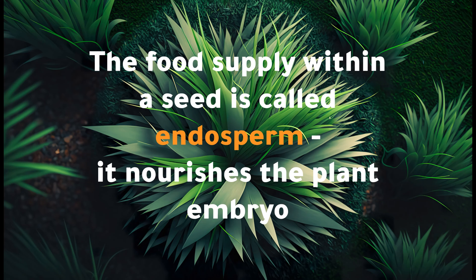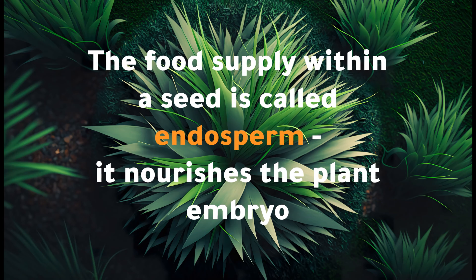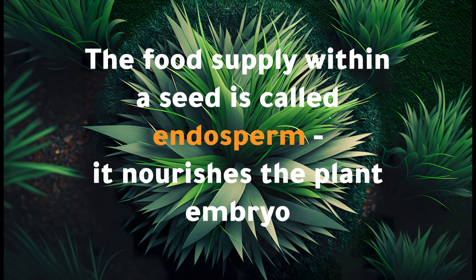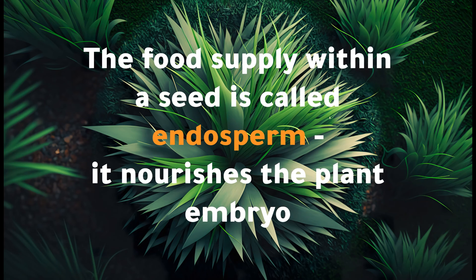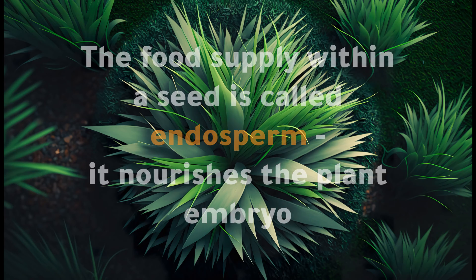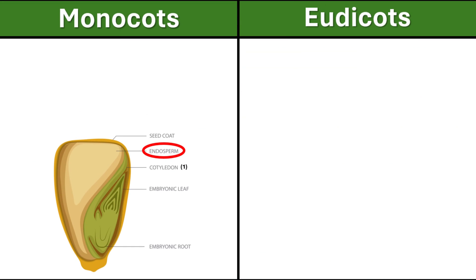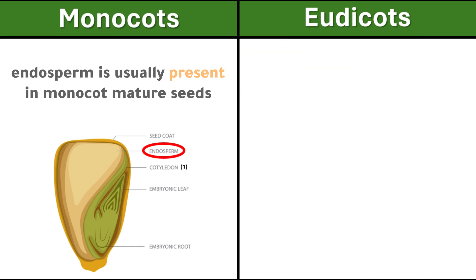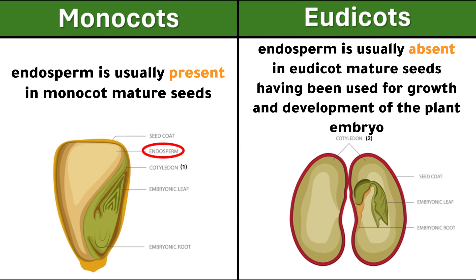The food supply within a seed is called endosperm; it nourishes the plant embryo. Endosperm is usually present in monocot mature seeds, and endosperm is usually absent in eudicot mature seeds, having been used for growth and development of the plant embryo.